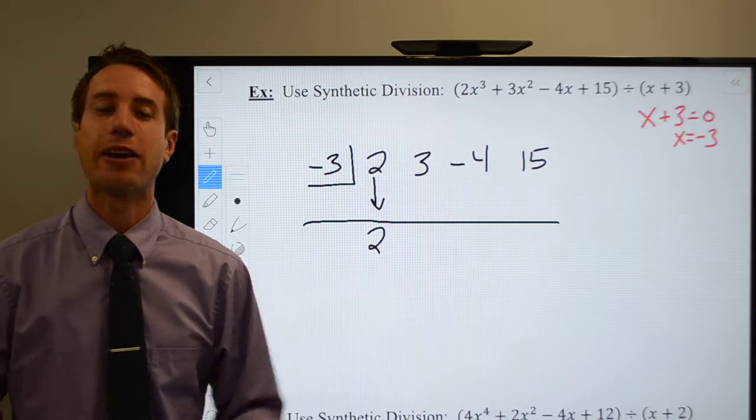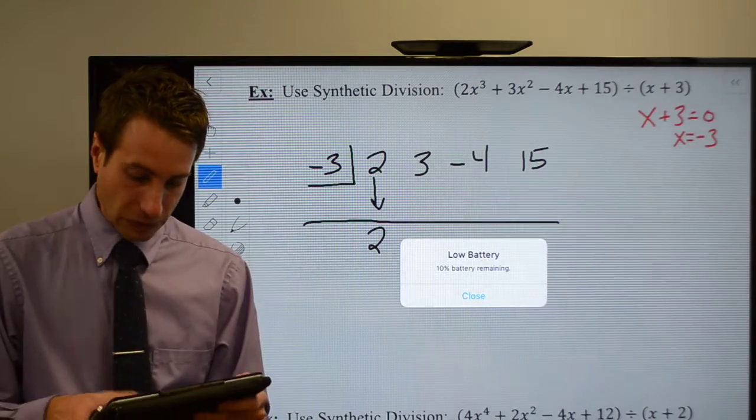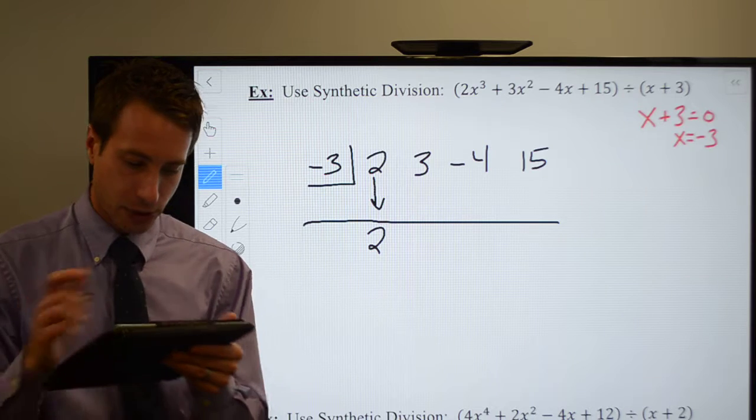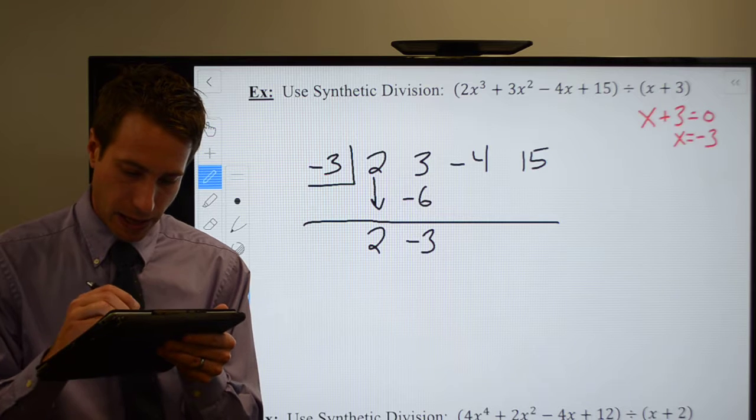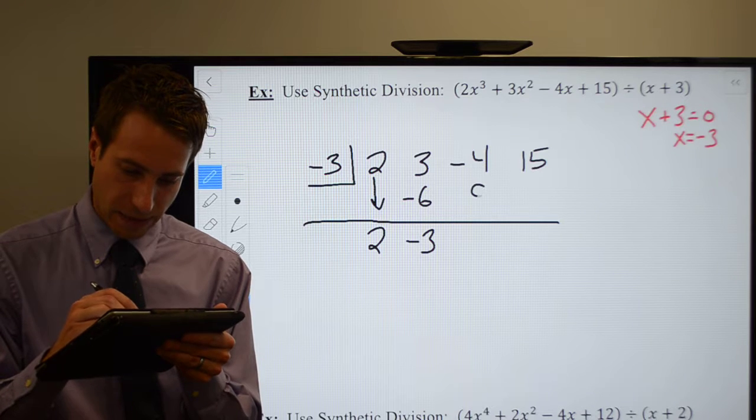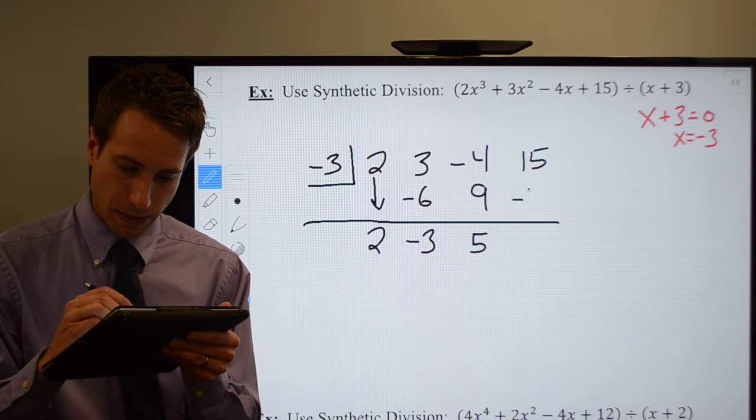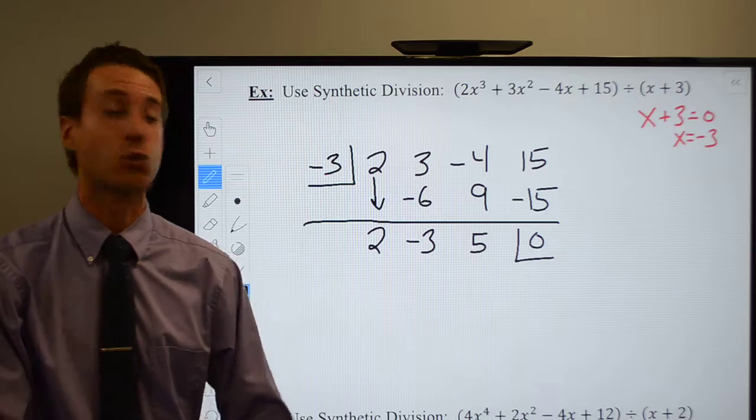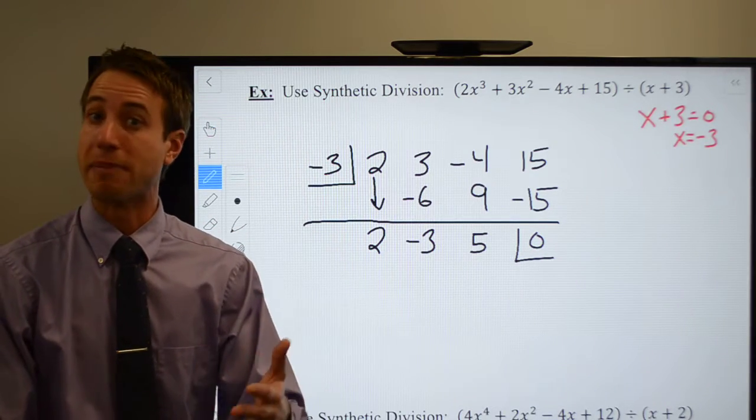From there, it's multiply and add until you run out of numbers. Negative three times two is going to be a negative six. Add them up, that's going to be a minus three. That's going to be positive nine, which is going to give me five. Negative three times five is going to be a minus 15, which sum to zero. In this case, remember, that last number is always going to come out to be your remainder.